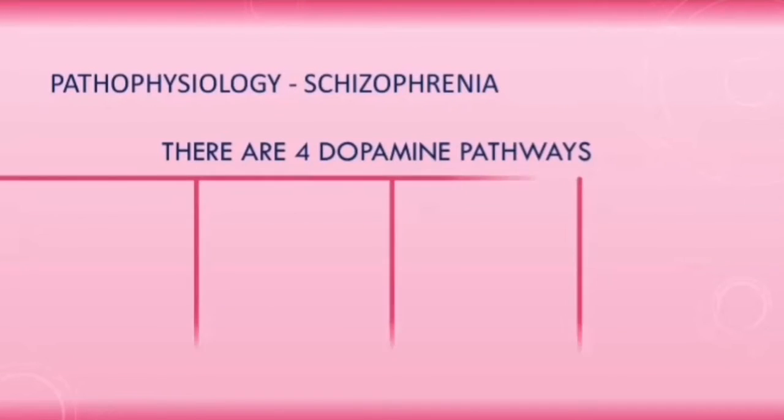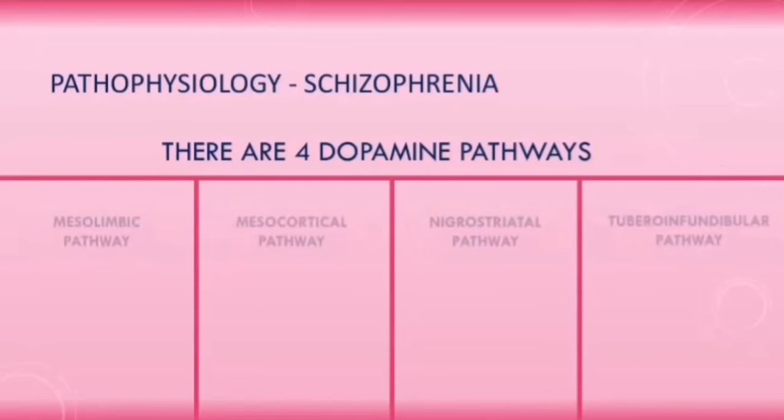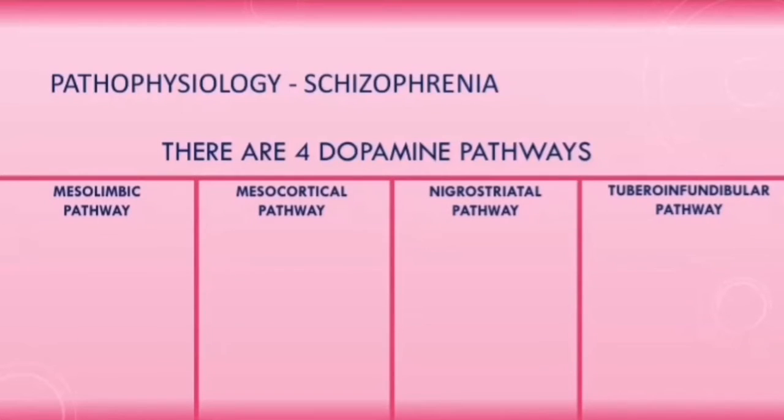There are four dopamine pathways in the brain. These are pathways rich in neurons that produce dopamine.